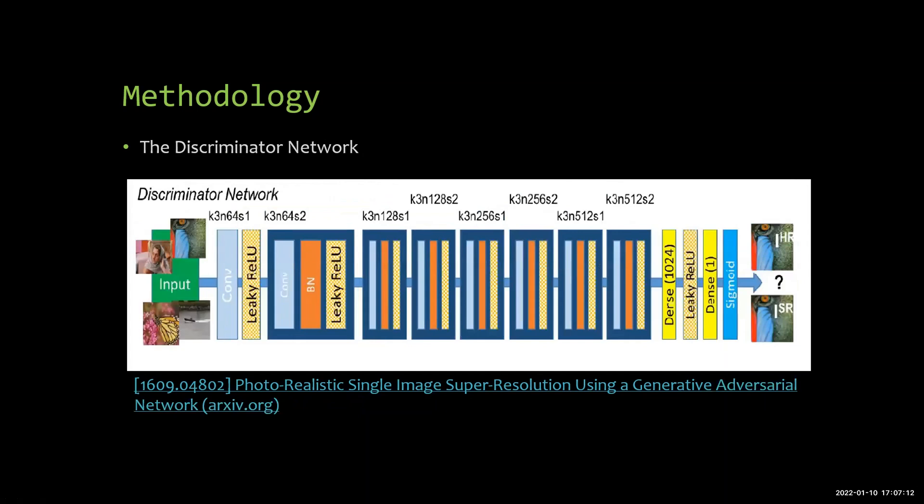The architecture of the discriminator is shown here. Several blocks of convolutional layers with batch normalization and leaky ReLU activation. After that we have a fully connected layer with 1024 units and then a single unit layer with a sigmoid activation to decide whether the generated image is good enough or not.